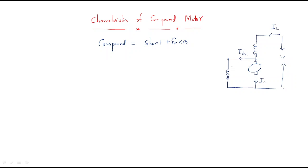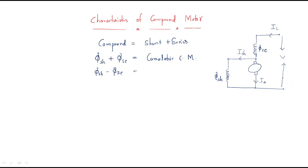Here we have the shunt winding and the series winding. The shunt winding provides shunt flux and the series winding provides series flux. If both fluxes are added together, it is called a cumulative compound motor. If the shunt flux and the series flux differ from each other, it is called a differential compound motor.